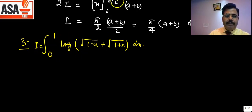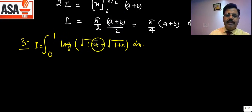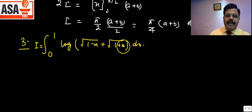If we apply the property and put (1−x), we get (1−x) and (2−x) terms which do not simplify symmetrically, so the reflection property doesn't directly help here. We therefore use integration by parts.